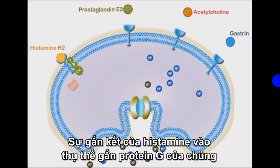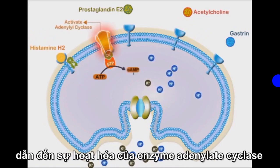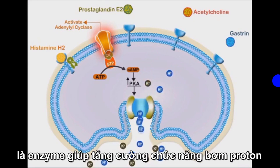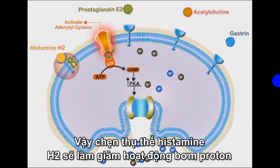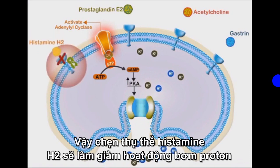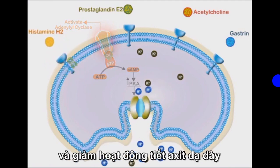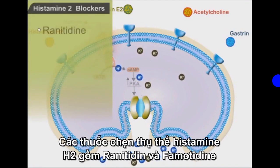Binding of histamine-2 molecules to their G-coupled receptors results in the activation of adenylyl cyclase enzyme. The active enzyme in turn increases the activity of protein kinase A, which enhances proton pump function. Blocking of histamine-2 receptors will reduce proton pump activity and acid secretion. Histamine-2 blockers include ranitidine and famotidine.